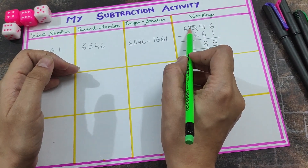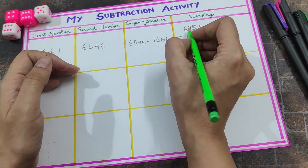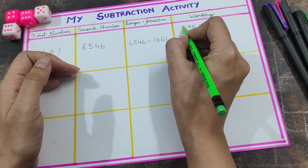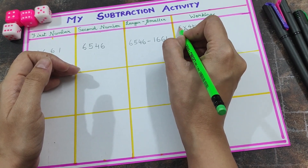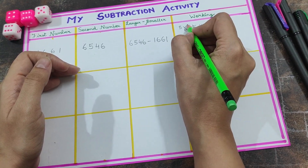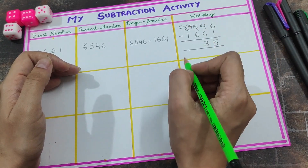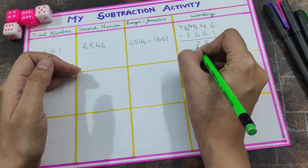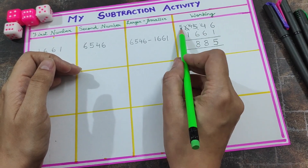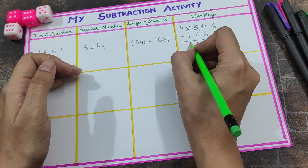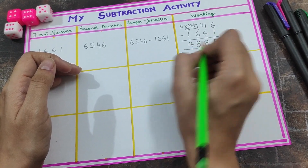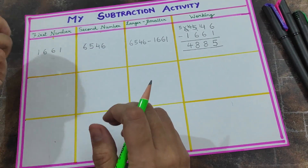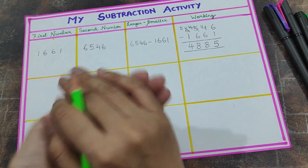Next is four minus six again. We go to the neighbor — that six becomes five, giving one ten to this column, making it fourteen. Fourteen minus six is eight again. The last digit is five minus one, which is four. So the answer is four thousand eight hundred and eighty-five.